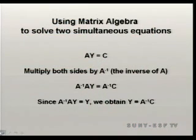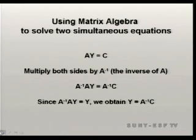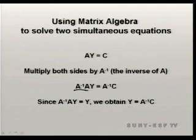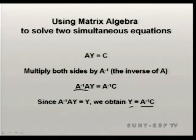Let's look at our handout. If we had an equation in matrix algebra of matrix A times matrix Y is equal to C, we would then multiply both sides of the equation by the inverse of matrix A — denoted as A raised to the negative first power, inverse A. By multiplying the inverse of A times A, this allows us to isolate Y on the left-hand side and makes it equal to the inverse of A times C.